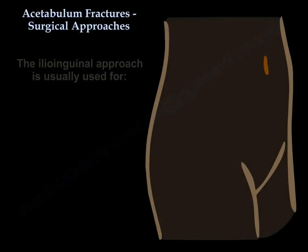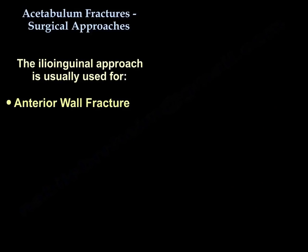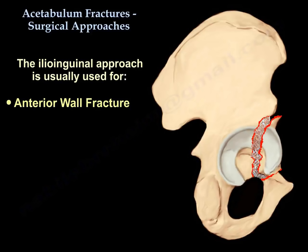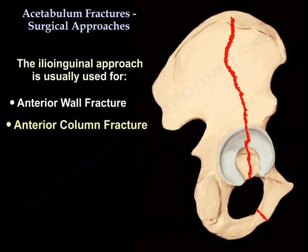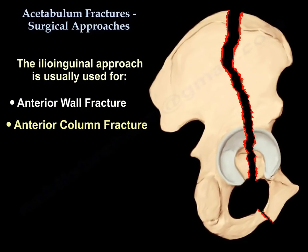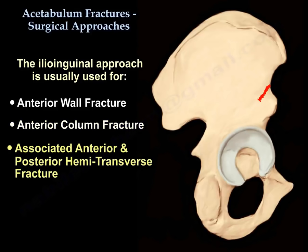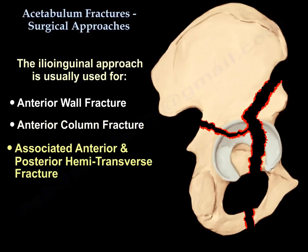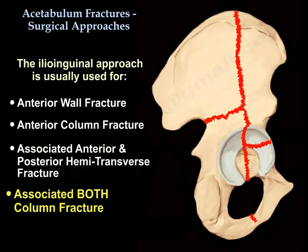The ilioinguinal approach is usually used for anterior wall fracture, anterior column fracture, for an associated anterior and posterior hemitransverse fracture, and for an associated both column fracture.